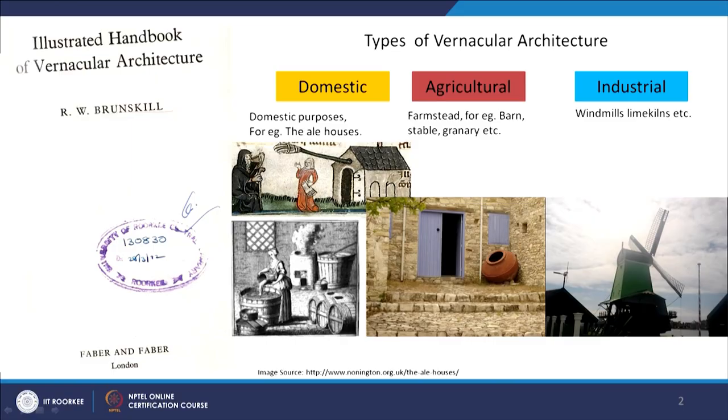This classification can be approached from a regional, country, or national understanding. Initially, Brunskill classifies types of vernacular architecture into three categories: number one, domestic; number two, agricultural; and number three, industrial.